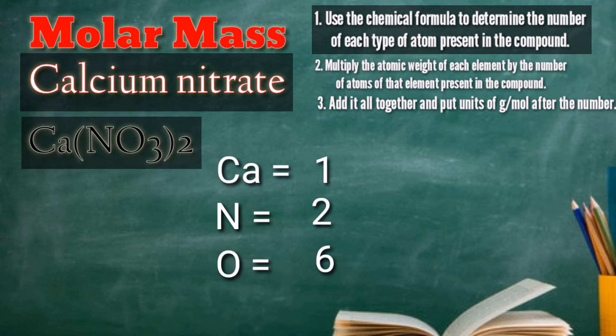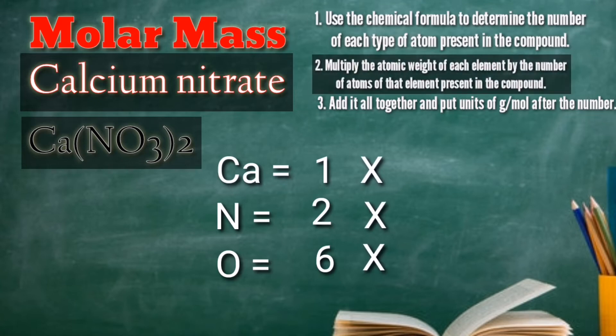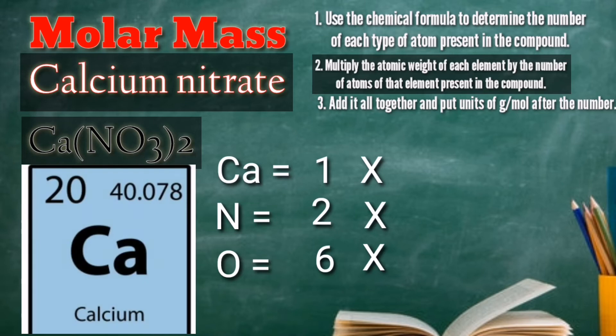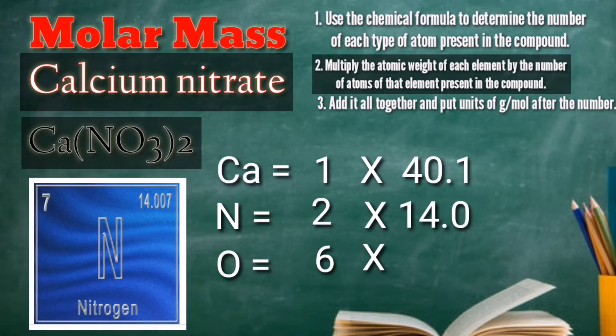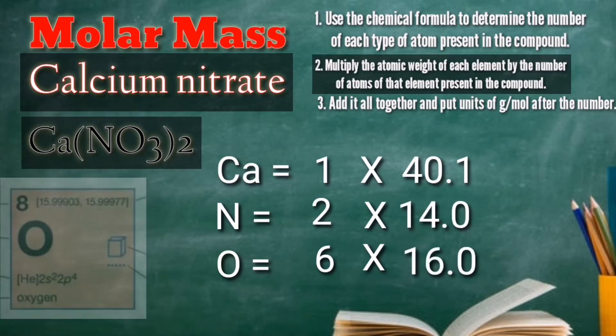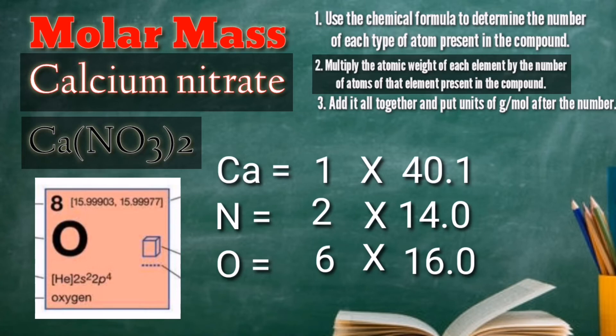Then, step two: multiply the atomic weight of each element by the number of atoms of that element present in the compound. We're going to use the periodic table to identify the atomic weight of each element. Calcium has 40.1 grams per mole, nitrogen 14.0 grams per mole, and oxygen 16.0 grams per mole.